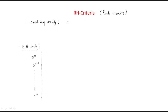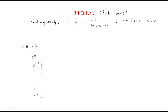The closed-loop transfer function is generally written as G(s) divided by 1 plus G(s)·H(s). From this closed-loop transfer function, we take the characteristic equation, which is 1 plus G(s)·H(s) equals zero. Using this characteristic equation, we analyze the stability of the given system.